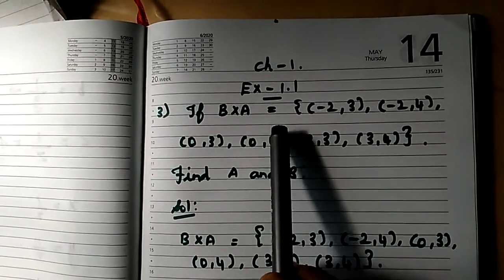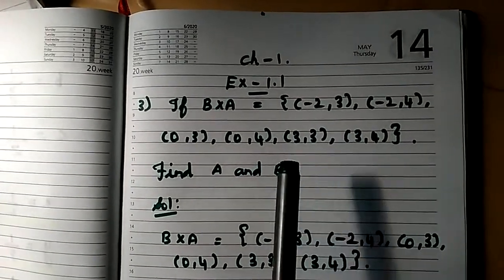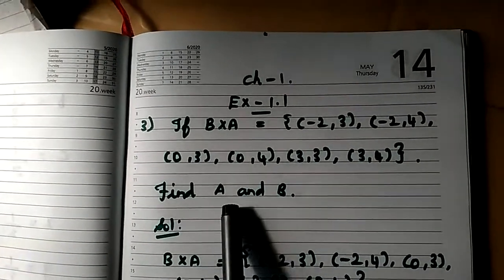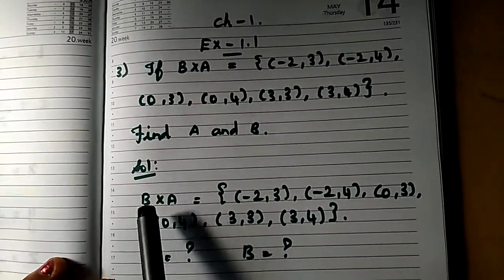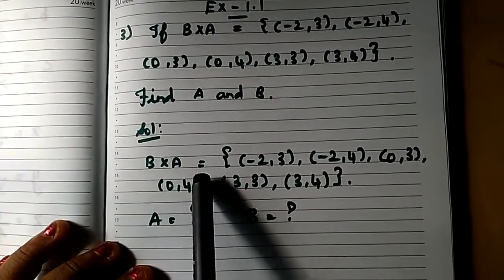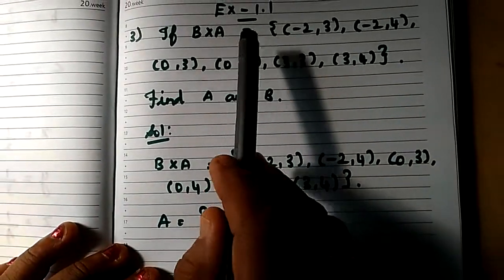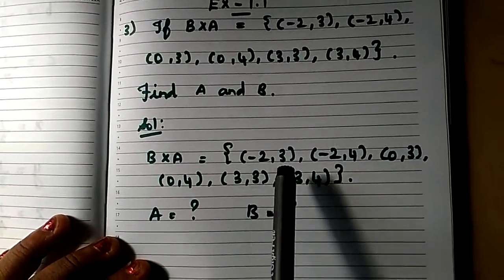So see children, B cross A is a Cartesian product. We need to find what are the elements in set A and what are the elements in set B. So let us see the solution. Given, B cross A equals the set of, again I'll repeat.